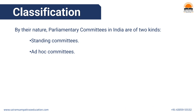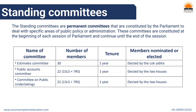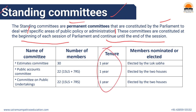Now let us look at the classification of parliamentary committees in India. Parliamentary committees are of two kinds: standing committees and ad hoc committees. Standing committees are permanent committees constituted by the parliament to deal with specific areas of public policy or administration. These committees are constituted at the beginning of each session of parliament and continue till the end of the session.